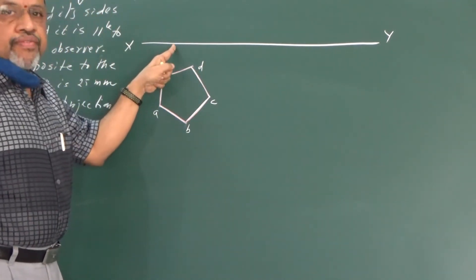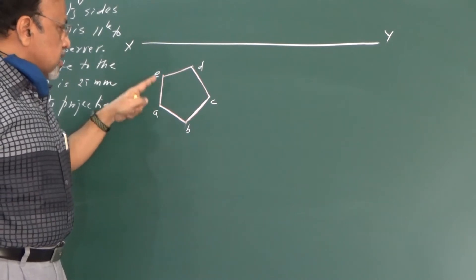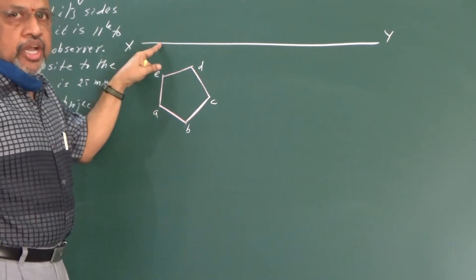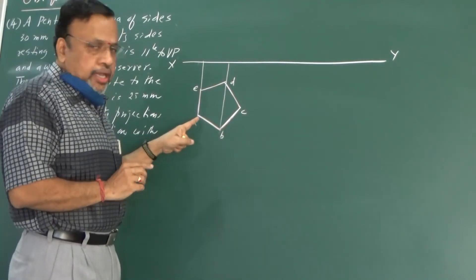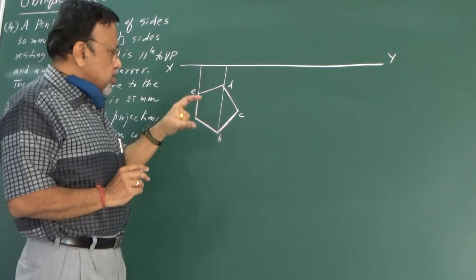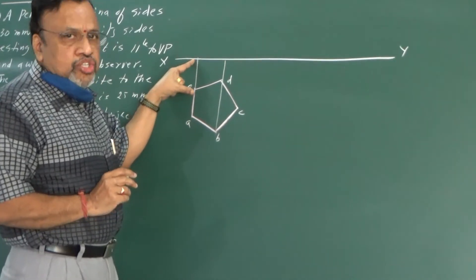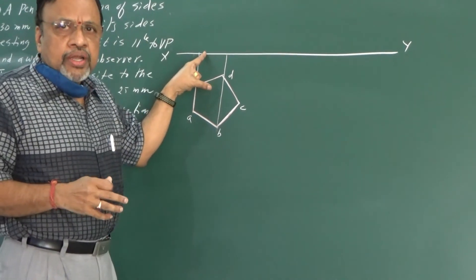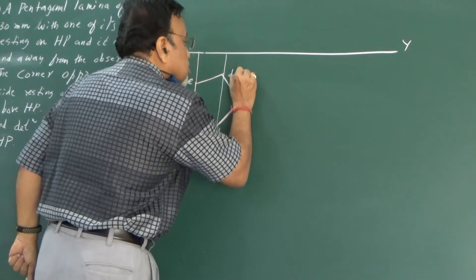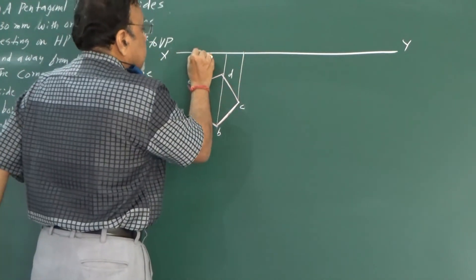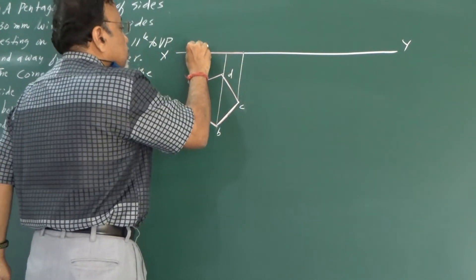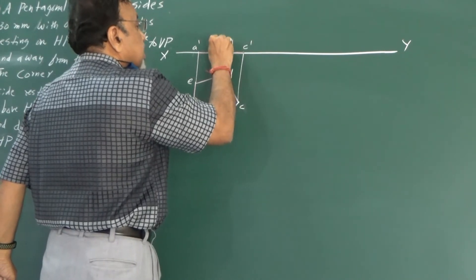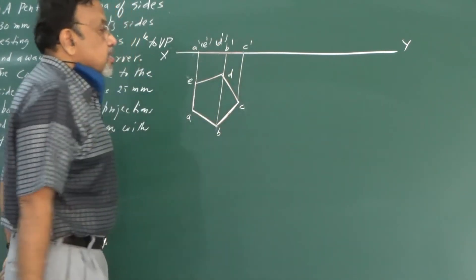Since one of the sides is resting on HP, we know that initially the side has to be perpendicular to VP. I have just drawn the lamina and named it. Since we are starting from the top view, naming should start from the leftmost visible point in the anticlockwise direction: A, B, C, D, E. Since side AE is on HP, initially assume the entire lamina to be on HP itself. I have drawn the top view, and now I need to draw the front view. Since AE is on HP, the front view initially lies on the XY line. Draw the projectors and get the front view, naming the points A dash, B dash, C dash, D dash, E dash. This is Stage 1.